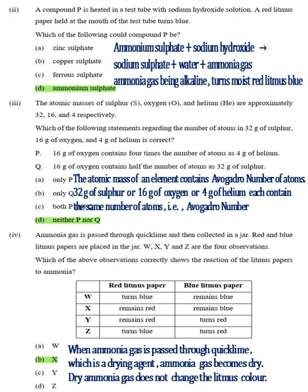Part 2, Answer D, Ammonium sulfate. Ammonium sulfate plus sodium hydroxide gives sodium sulfate, water, and ammonia gas. Ammonia gas, being alkaline, turns moist red litmus blue. Part 3, Answer D.